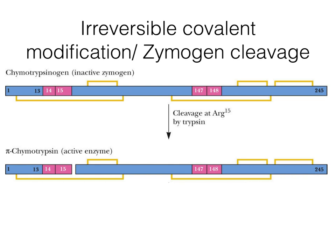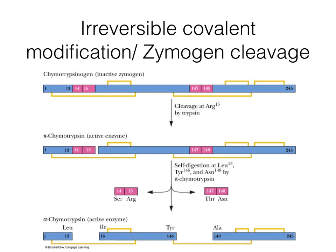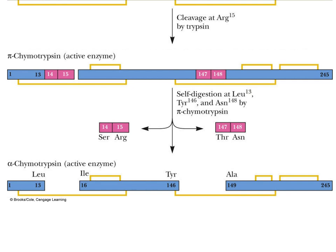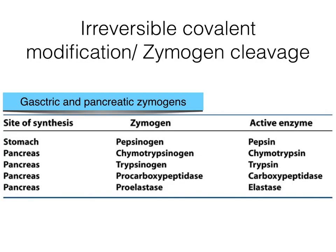Pi-chymotrypsin will further undergo activation with the removal of amino acids 14 and 15, as well as 147 and 148, yielding now three fragments still linked together by disulfide linkages. This is now referred to as alpha-chymotrypsin, the most active form of the enzyme. As you can see, this involves cleavage of the zymogen yielding a smaller enzyme that is active in form. It is also irreversible because once you cleave off the peptide bond, you can no longer put it back together.